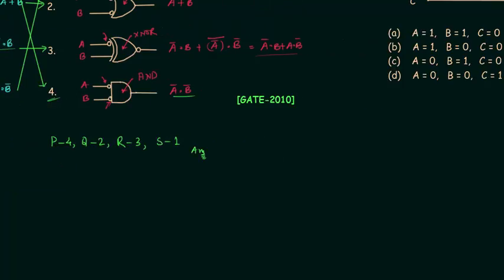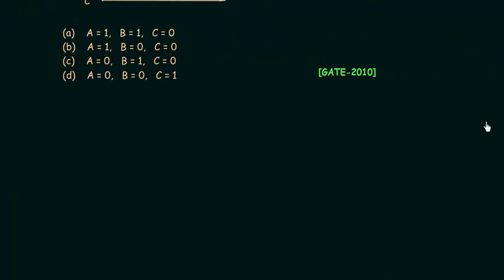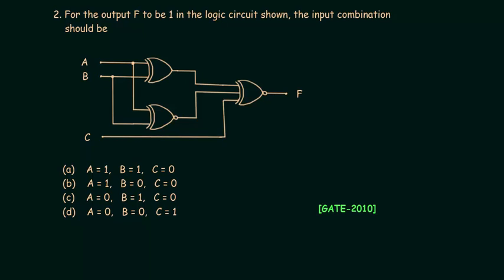Now we move to the second problem, also from the GATE 2010 paper. The problem asks: for the output F to be 1 in the logic circuit shown, what should the input combination be? We have three inputs A, B, and C, and we need to find values of A, B, and C such that F equals 1.